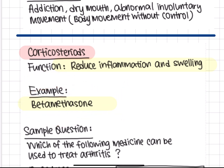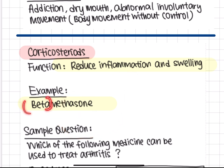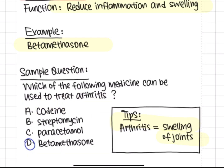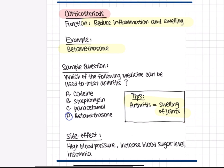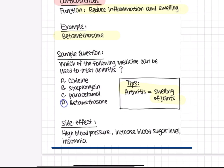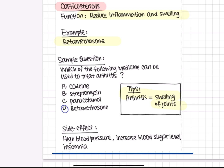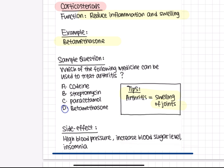Corticosteroids are used to reduce inflammation and swelling. An example is betamethasone. A good application: arthritis is the swelling of joints, so it is treated with corticosteroids. Side effects of corticosteroids include high blood pressure, increased blood sugar, and insomnia.